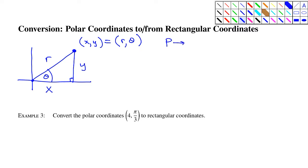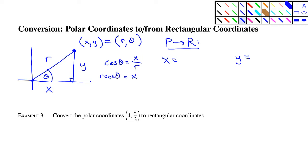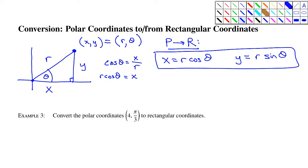To convert from polar to rectangular, we're given r and theta and want to produce x and y. From the definitions of sine and cosine: cosine of theta equals x over r, so x equals r cosine theta. Similarly, y equals r sine theta. You do need to memorize these, but as long as you can remember the picture, you can produce them.